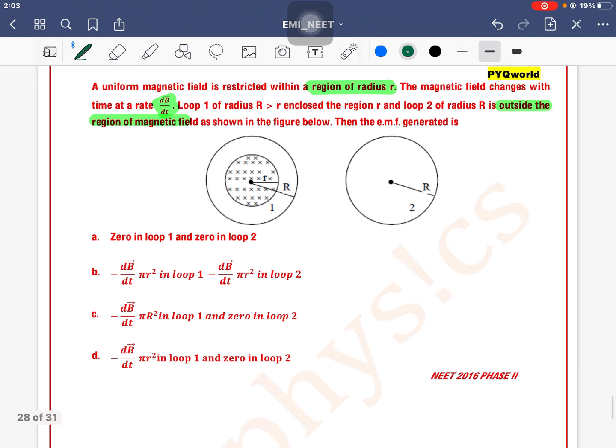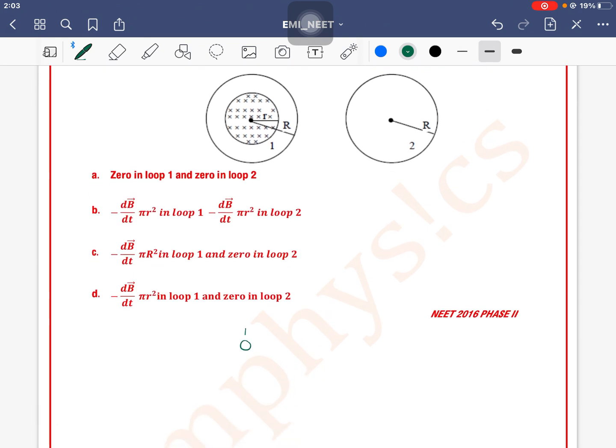To find the EMF, the basic formula is magnetic flux BA cos theta. So flux is equal to, the area is π r², so the EMF we get is minus dΦ/dt.